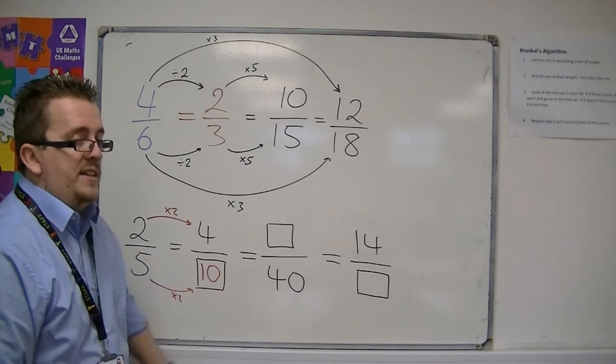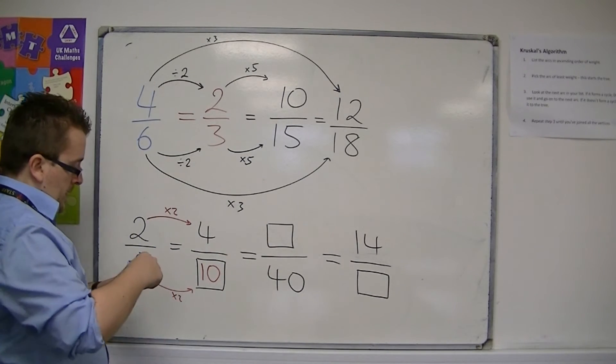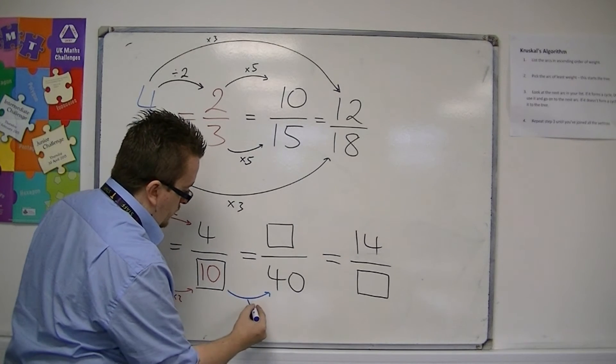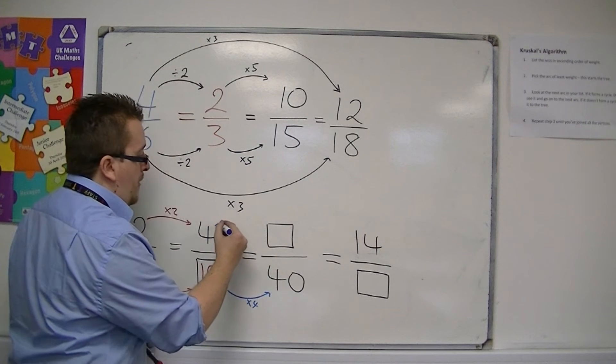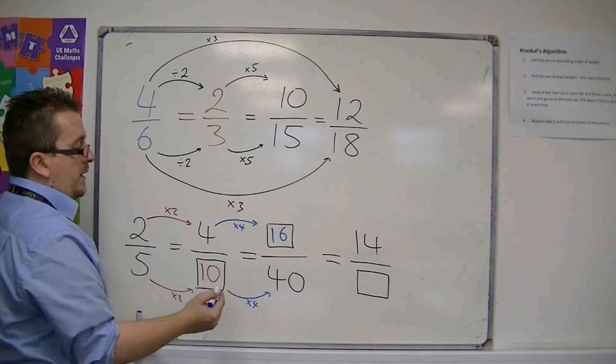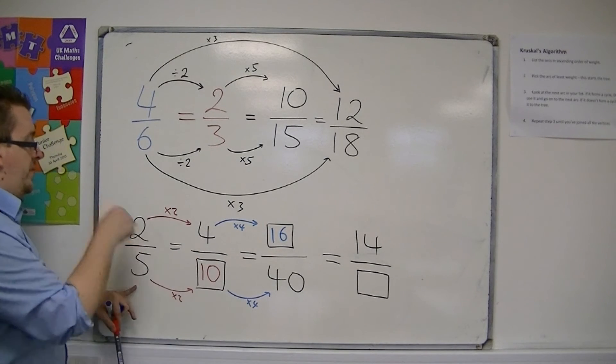We then need to get to something over 40. So 10 times 4 would get me to 40. So if I multiply the top by 4 as well, I would have 16. So 16/40 is equivalent to both 4/10 and 2/5 as well.